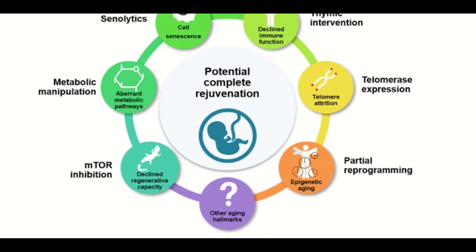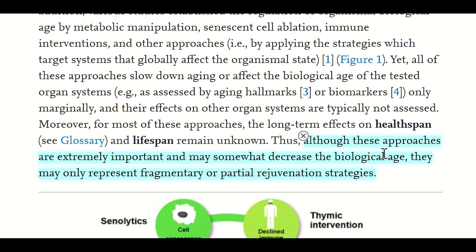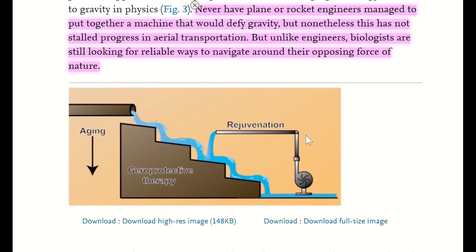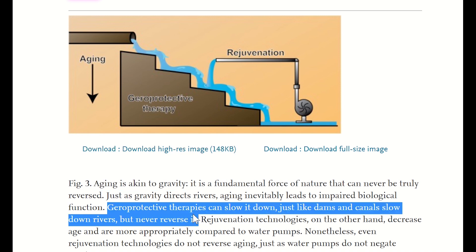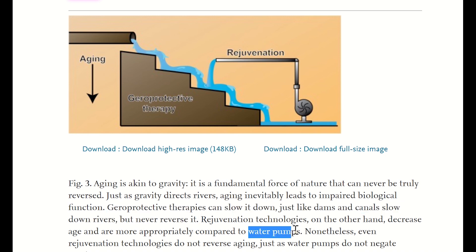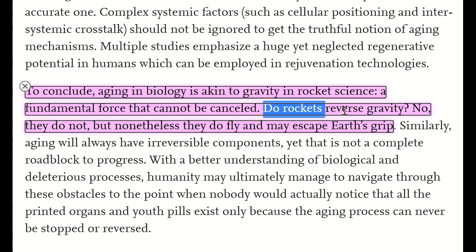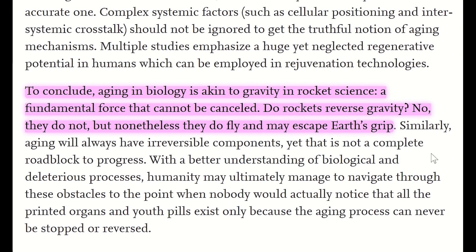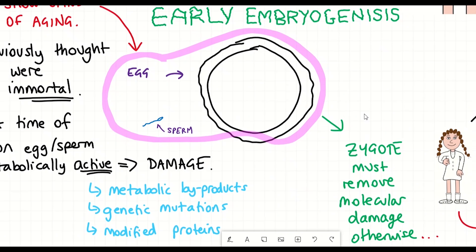The last main point from this article is how cellular reprogramming can be thought of as a more advanced version of current approaches to delay ageing. The author describes interventions such as senolytics and metabolic manipulation as partial reprogramming — approaches that are extremely important and may somewhat decrease biological age, but may only represent fragmentary or partial rejuvenation strategies. To use an analogy: ageing is akin to gravity, a fundamental force that can never truly be reversed. Protective therapies could slow this down — like canals slowing rivers — but can never reverse it. Rejuvenation technologies, on the other hand, could be thought of as water pumps. Using a second analogy from rocket science: if ageing is like gravity, then just as rockets can fly and escape Earth's grip without reversing gravity, understanding early rejuvenation and development could help us better understand the underlying biochemical mechanisms underpinning rejuvenation, with great potential for therapeutic uses.